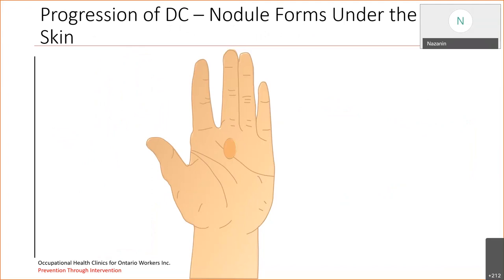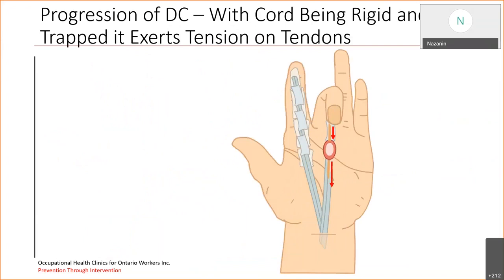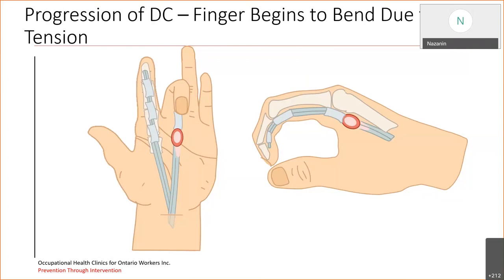But as the disease progresses, nodules actually form under the skin. After that, you can see that the nodules and the fibrous cords are actually trapped behind the tendon sheaths, and they exert tension on that tendon. So the functionality is compromised, and with the cord being rigid and trapped, it exerts tension on the tendons.